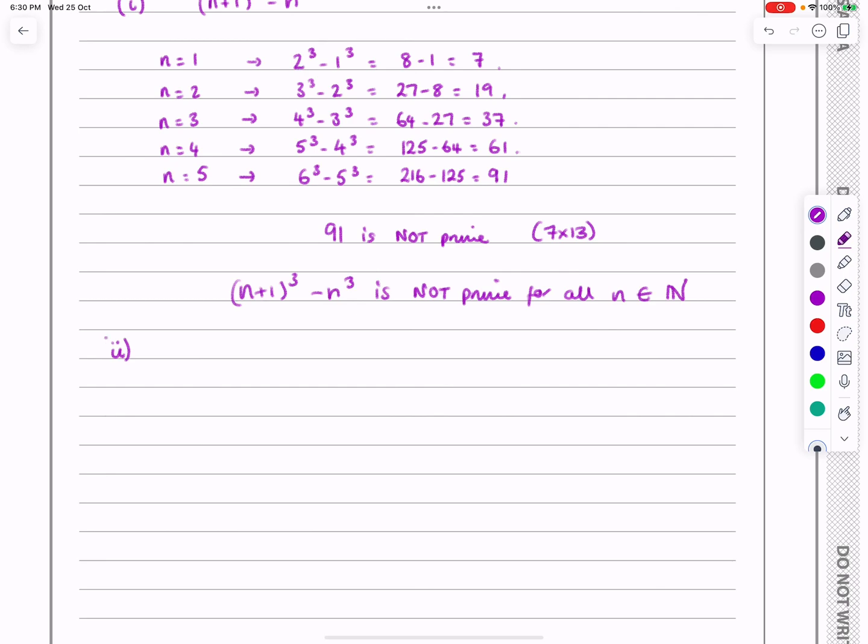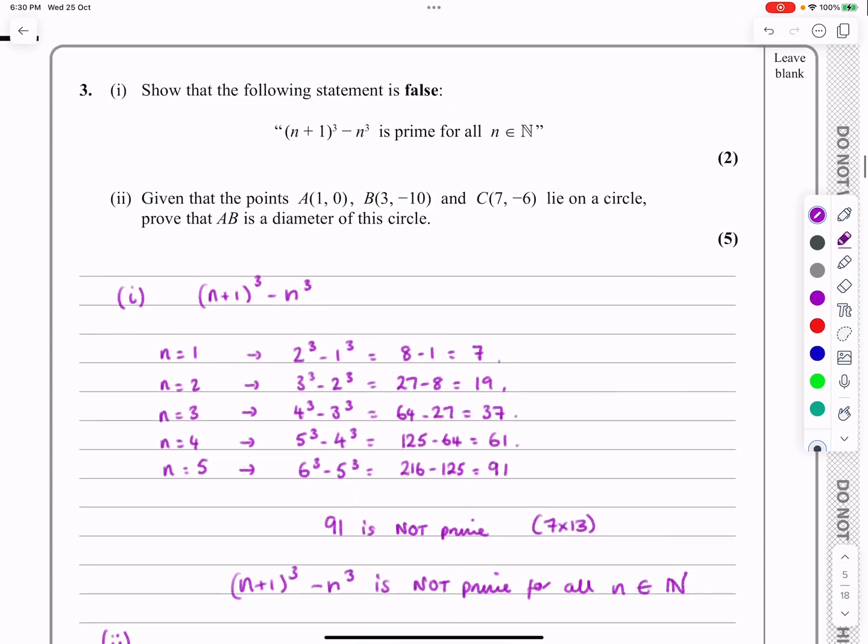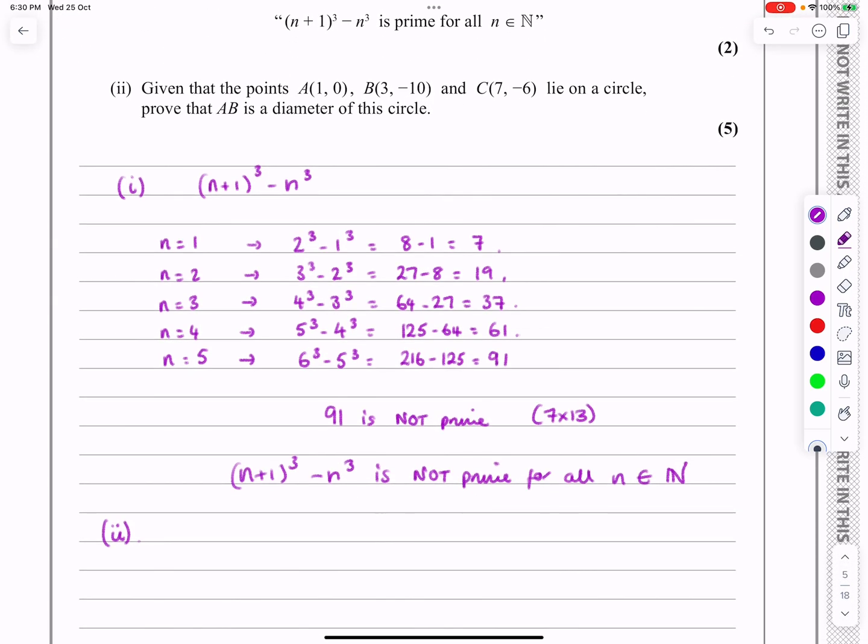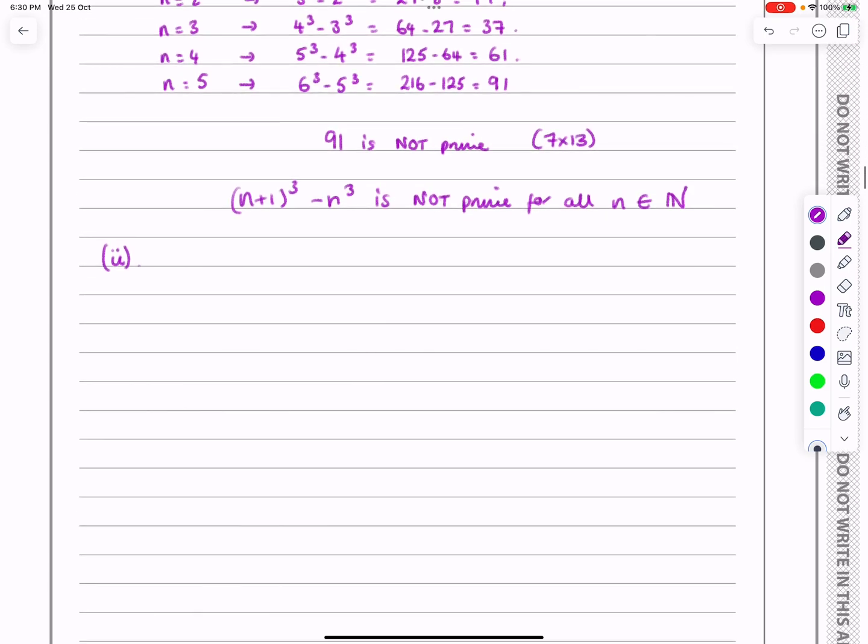So part 2. If we're looking at part 2 then, what have we got? Given the points A, B and C lie on a circle, prove that AB is a diameter of this circle. Okay, so let's draw it out.